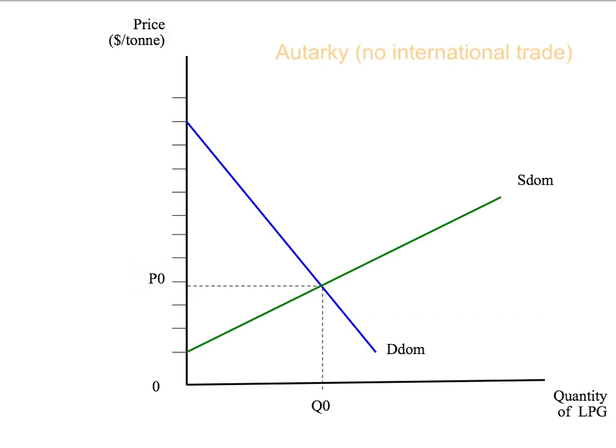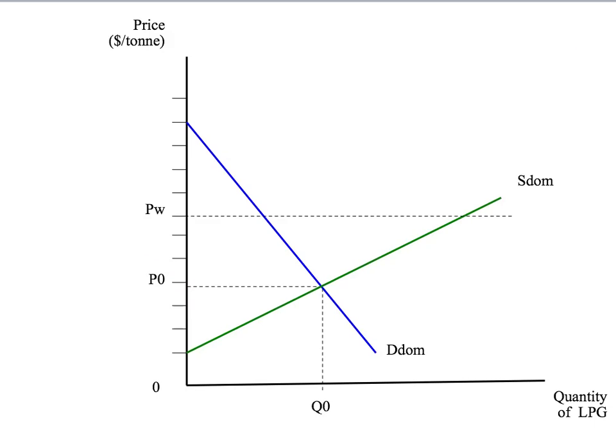Now what happens if we open up to international trade? Let's start by looking at the situation where the world price of LPG is above the domestic price of LPG. That's exactly the situation facing Australia in 2014 as it starts to open up for domestic exports of LPG. Notice that the world price is above the domestic price, so there will be an incentive for domestic producers to sell at the higher world price rather than sell at the lower domestic price.